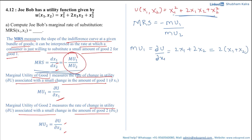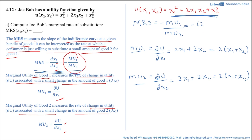Now let's calculate mu2, the marginal utility of good 2. Mu2 is the partial derivative of the utility function with respect to x2, which gives 2x1 + 2x2, equal to 2(x1 + x2). Putting the values of mu1 and mu2 into the MRS formula: minus 2(x1 + x2) divided by 2(x1 + x2) — these cancel, giving MRS = −1.